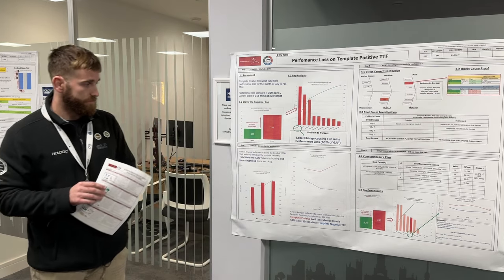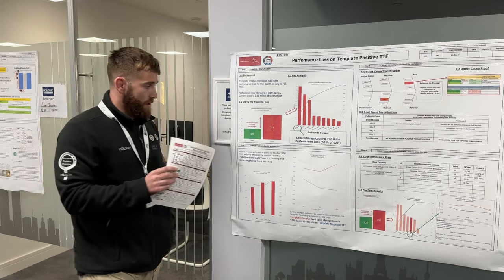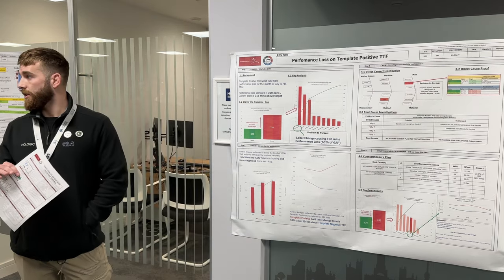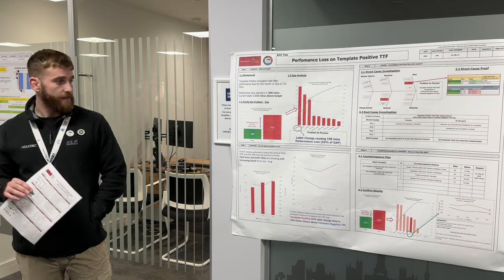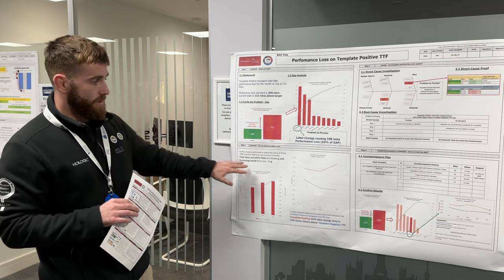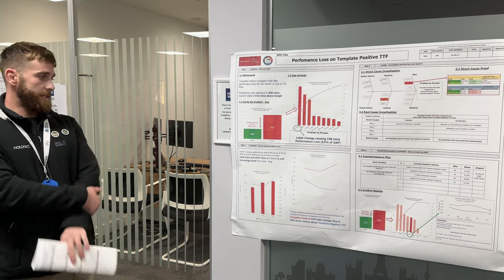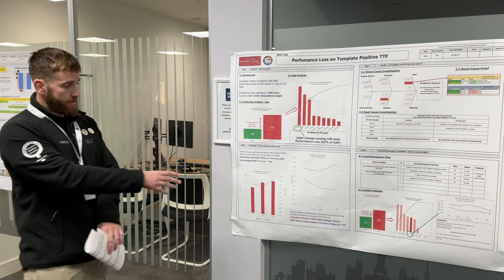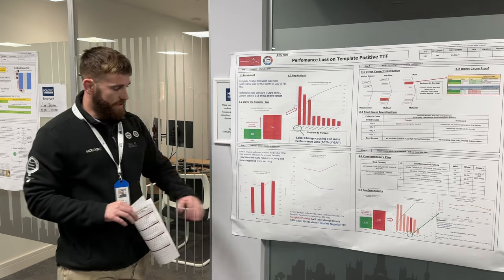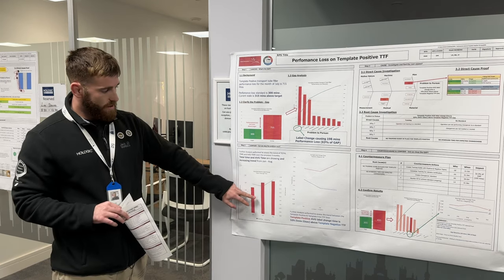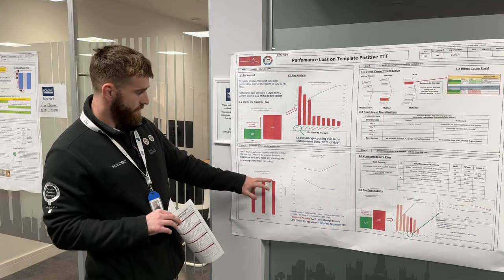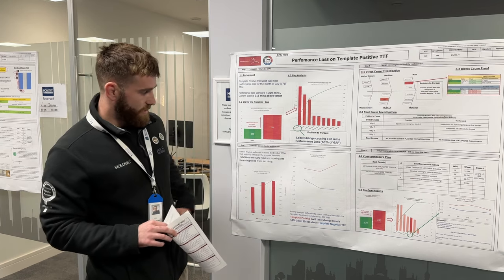Looking at containment, there was nothing that would reduce that performance loss straight away, so we used this step to look into the data a little bit deeper. We looked at the average trend and over the last three months we could see an increase in trend on label change performance.